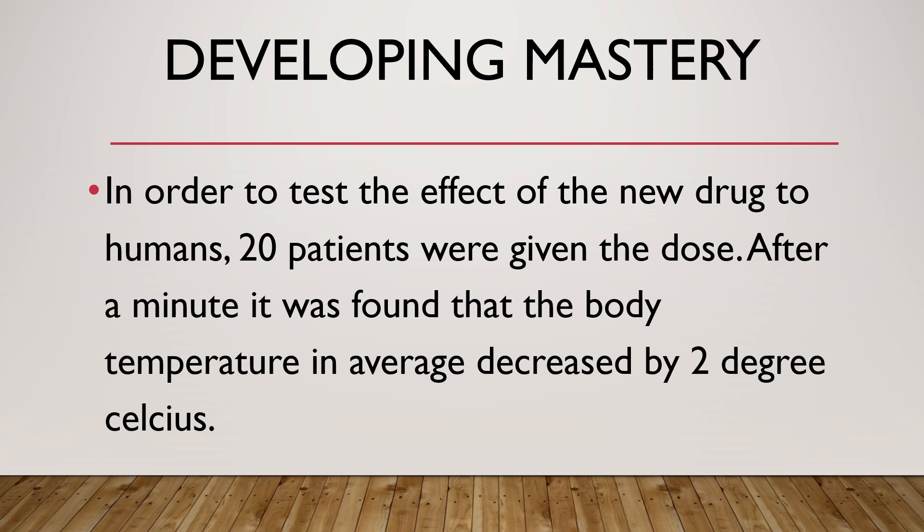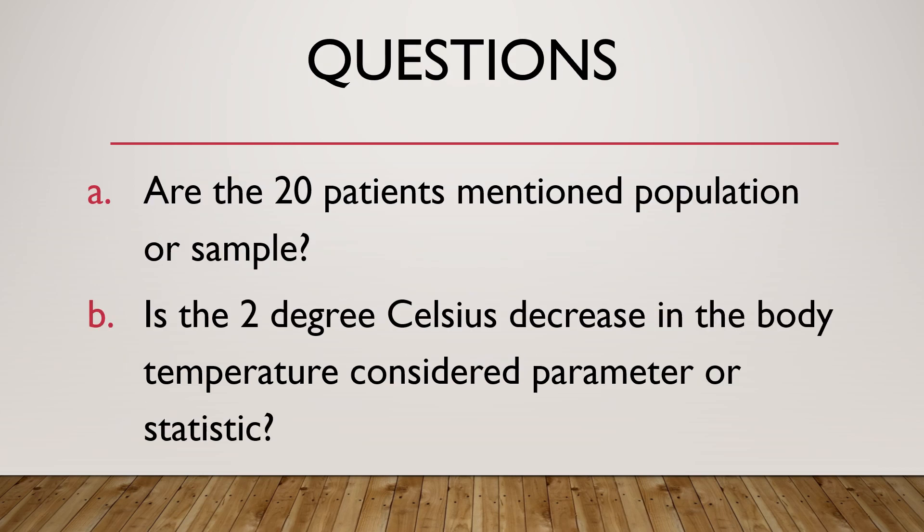In order to test the effect of a new drug on humans, 20 patients were given the dose. After a minute, it was found that the body temperature, on average, decreased by 2 degrees Celsius. Questions: are the 20 patients mentioned a population or a sample? Is the 2 degrees Celsius decrease in body temperature considered a parameter or a statistic?